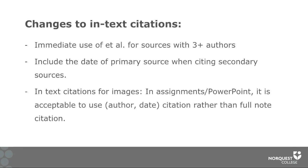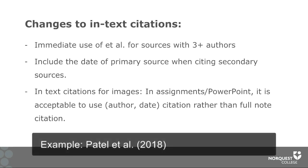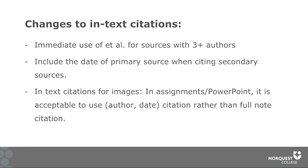Here are some changes as they relate to in-text citations for APA 7. If you have a source that has more than two authors — so three or more authors — you're going to use 'et al.' immediately. Et al. is the abbreviation that means 'and everyone,' which can be included in in-text citations after the name of the first author, allowing us to save space when writing in-text citations.